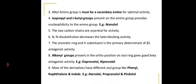N,N-disubstitution — that is, substitution at the amino group — decreases the beta blocking activity. The aromatic ring and its substituents are the primary determinants of beta-1 antagonist activity. An alkyl group present in the ortho position on the aryl group gives good beta antagonist activity — for example, oxprenolol and alprenolol.